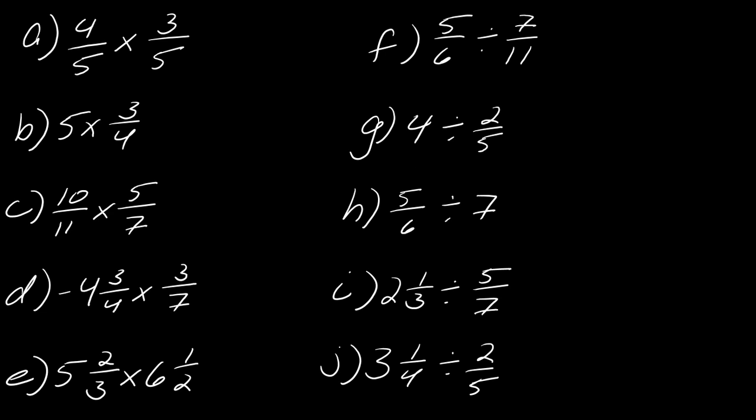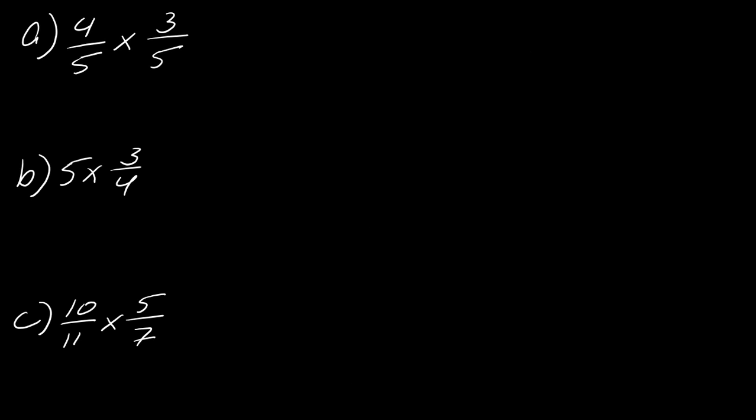Let's get into the multiplication and division problems. Starting with the first one, remember we just multiply straight across, and right now I'm not going to worry about simplifying. So four times three is 12, five times five is 25 — and that's it for that one.